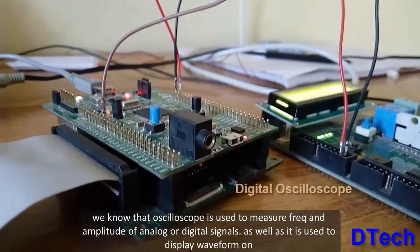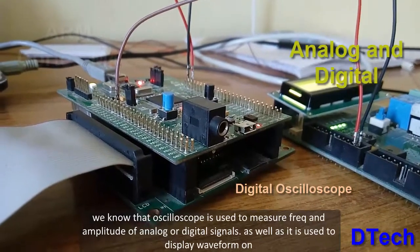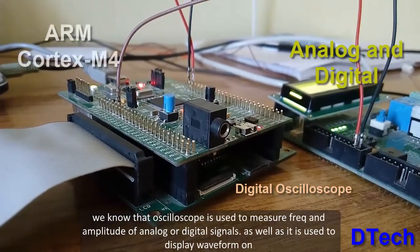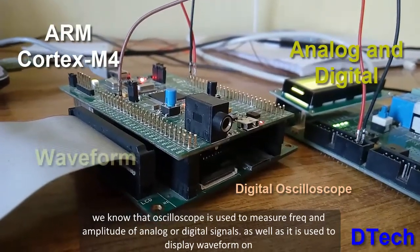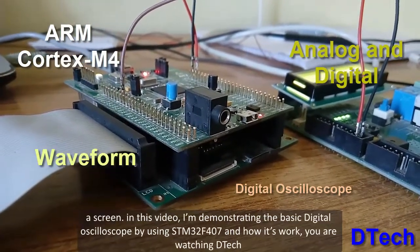We know that oscilloscope is used to measure frequency and amplitude of analog or digital signals, as well as to display waveform on a screen.